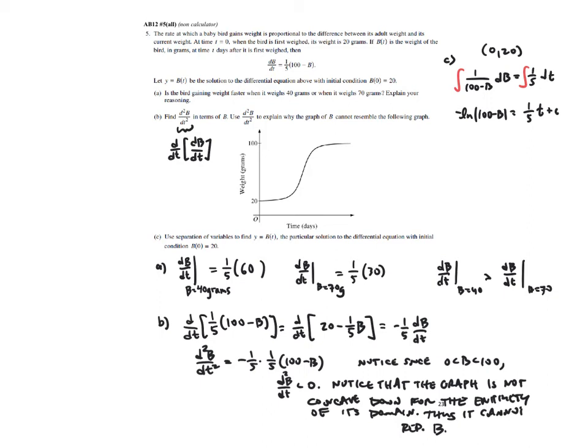I'm going to go ahead and use my initial condition at this point. I'm going to plug in a 20 for b and a zero for t. So I get negative natural log of the absolute value of 80 is equal to zero plus c. I'm actually going to write this as the natural log of 1 over 80.